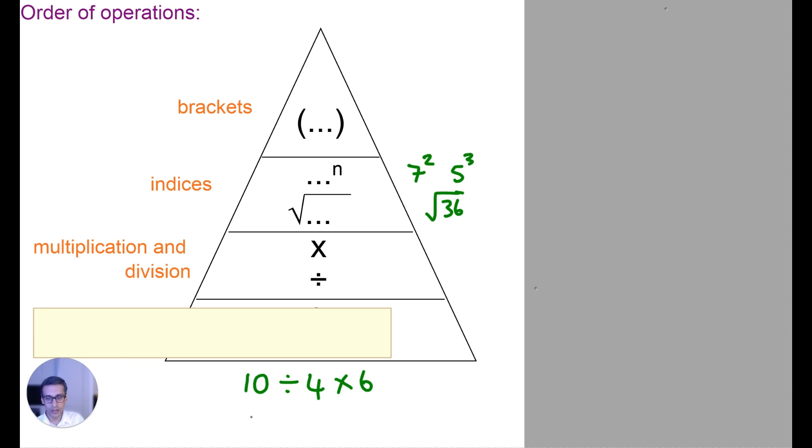If on the other hand you had 10 times 4 divided by 6, you work from left to right. These are equally important, so you just do 10 times 4 first, or in this example you do 10 divided by 4 first. Okay, so that's why they're on the same level. The next thing we want to look at is adding and subtracting, again equally important, so we go from left to right.